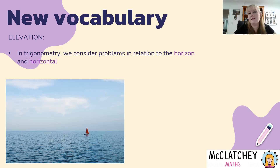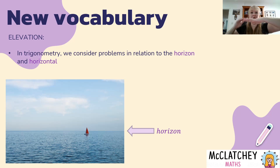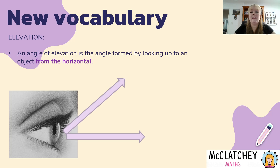In trigonometry we consider lots of different kinds of problems, but for angles of elevation and depression we are interested in the relationship between what we see and the horizon. If you think about when you look out at the ocean, you see that line between the sky and the sea — that is our horizon — and so anything that's horizontal is on this angle; it's sort of like the ground, it's flat. We're interested in the angle between this horizontal and something we're looking up towards, looking straight ahead.